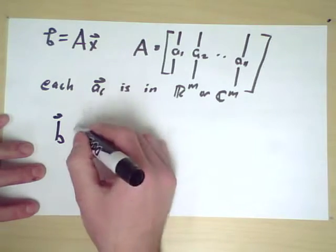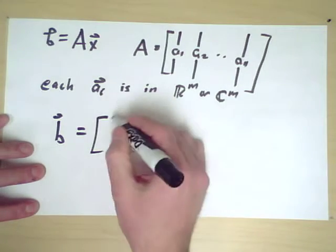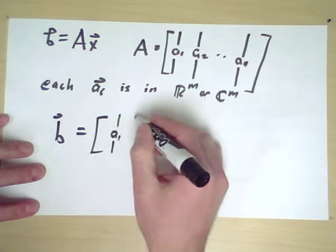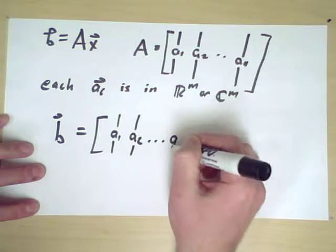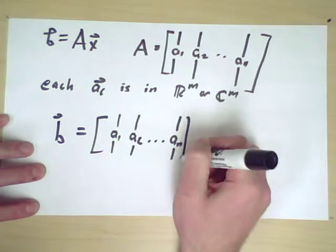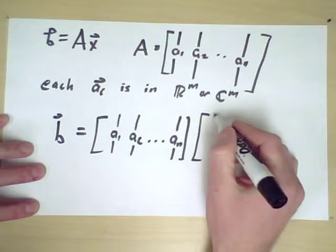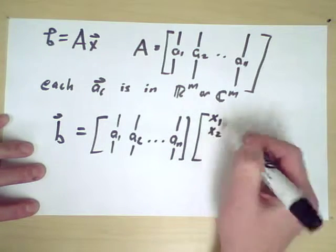So one way we can write this is when we write the vector b, well let's see here. So I can write this as a_1, a_2, dot dot dot a_n, and then times the vector of coefficients x_1, x_2, up to x_n.